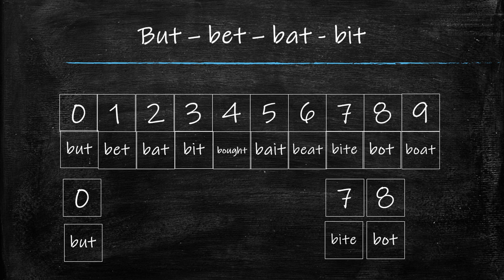Drill the words with the class until students can recognize and reproduce the different sounds correctly. Then tell the class you're going to give them a telephone number — but instead of numbers, give them the word that represents each number on the board. So if you wanted to give 0-7-8, you'd say 'butt-bite-bot.' Then do some class checking, perhaps in teams for a large class. Students can go around giving each other their telephone numbers using the words. For a competition, the winner is the student with the most correct telephone numbers in five minutes — endless possibilities for fun and improvement of vowel pronunciation.